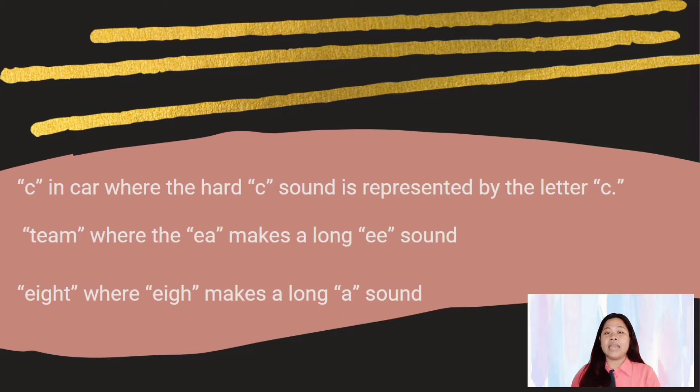A two-letter grapheme is found in the word 'team,' where EA makes a long E sound. A four-letter grapheme can be found in the word 'eight,' where IGHT makes a long A sound. In 'Let Us Correlate Sounds with Words,' allow students to put their fingers on their throat and switch between saying sounds. They will be able to feel the vibration in the throat as their voice box turns on and off, yet their mouth stays in the same position. When writing these sounds, they are represented by two different graphemes. This multi-sensory technique can be used to help students correctly articulate voiced and unvoiced phonemes.